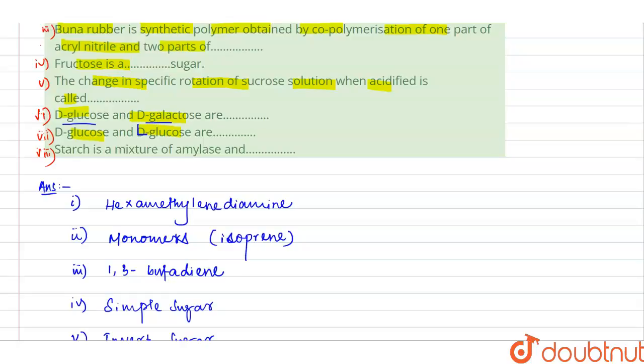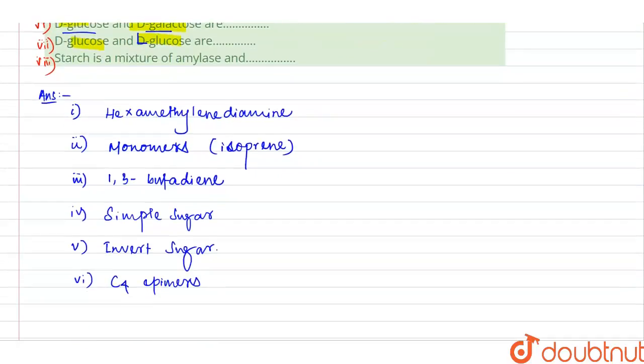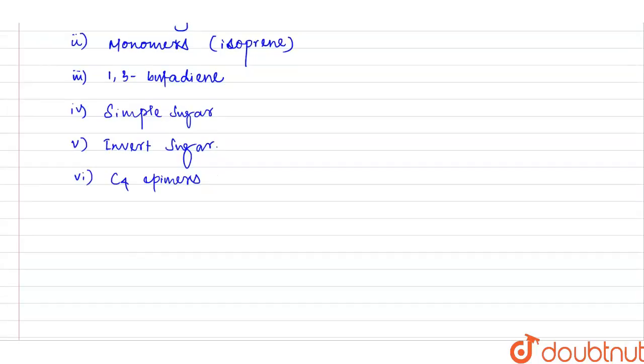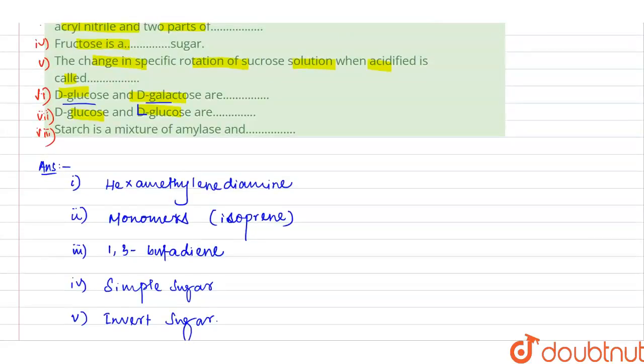So this question should be D-glucose and L-glucose, something like that. Then if the question is D-glucose and L-glucose, the answer will be enantiomers. Okay, now the last one is: starch is a mixture of amylose and what?